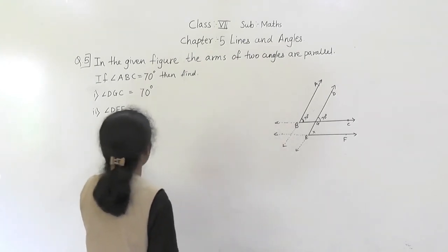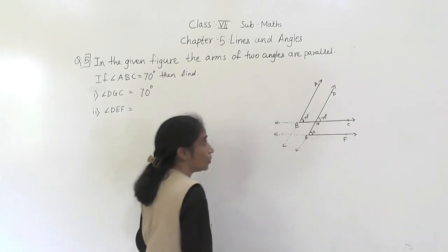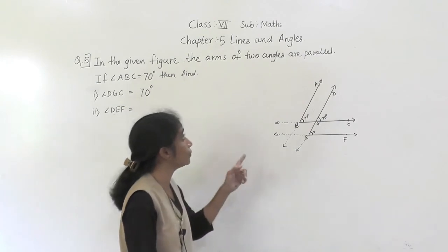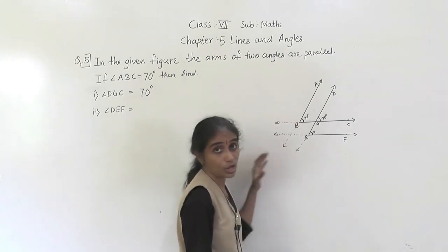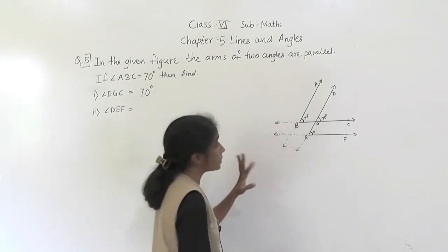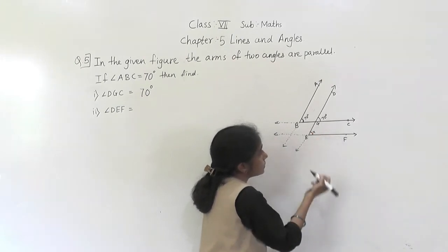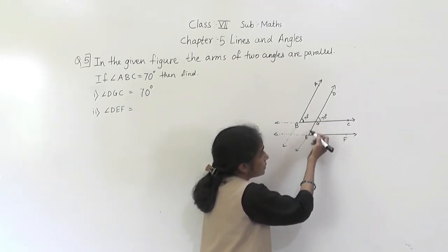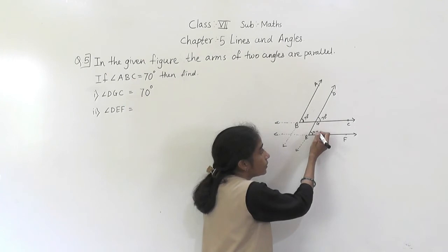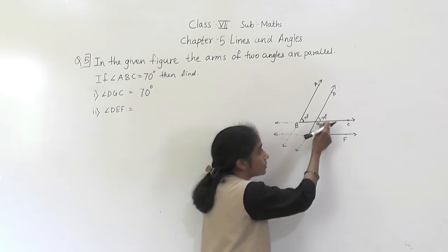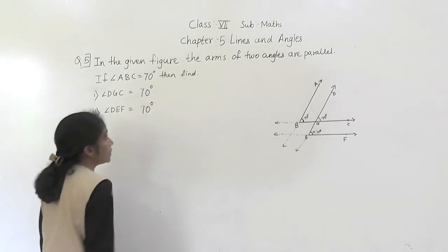Now we have to find angle DEF. The arms of two angles are parallel — these two arms are parallel. Suppose this is the transversal. If this angle is 70 degrees, then this angle is also 70 degrees because these angles are corresponding angles. So angle DEF is also 70 degrees.